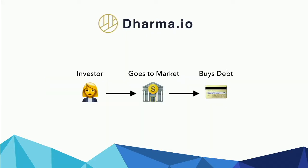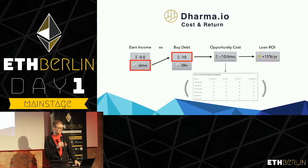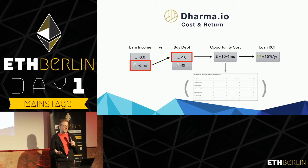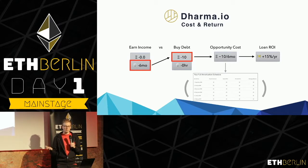Comparing that to the crypto space, we can look at a project like Dharma, where an investor has the ability to go out to a marketplace and pick up a debt asset. They have a similar decision model — they can choose to earn income over the course of, say, six months, or buy a debt asset for 10 ETH. There's an opportunity cost of 10 ETH over the course of six months amortized, and the return on their investment they're hoping to make could be something like 15% per year.